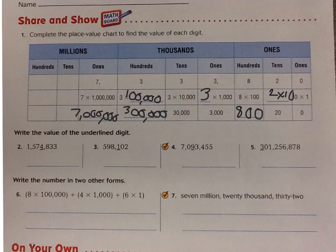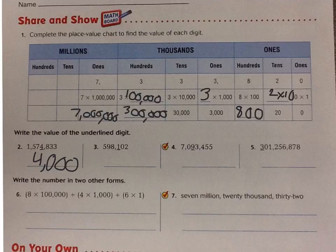There might be some questions where they ask you to find the value of each digit. We talked about that with our students — there is a difference between the place value it's in and the value of the digit. For example, on number 2, if someone were to write the word 'thousands,' they would be incorrect because the value of that 4 is not thousands — the value of that 4 is 4,000. So we need to be careful to not mix those two terms up. The 1 is in the 100th place, so it does in fact happen to be 100. The 9 is in the 10,000th place, so it is 90,000. And the 3 over there is in the 100,000,000th place, so it is worth 300,000,000.